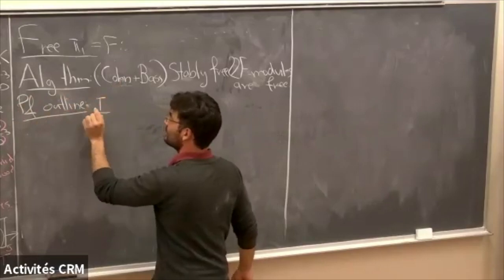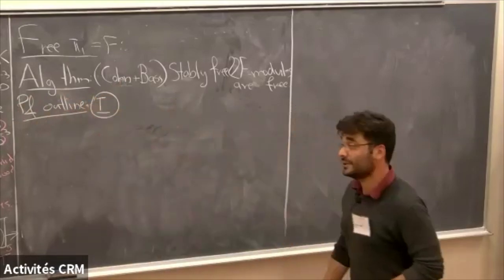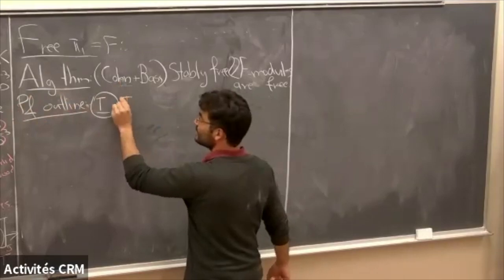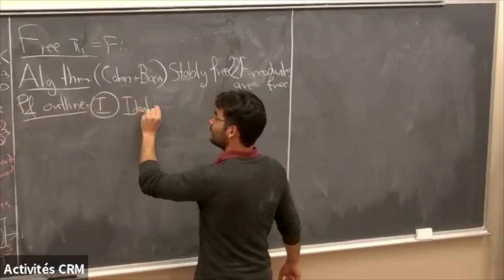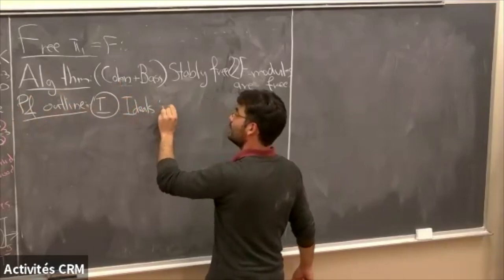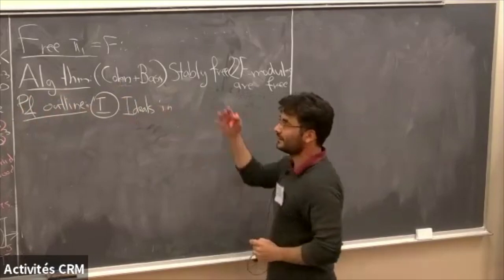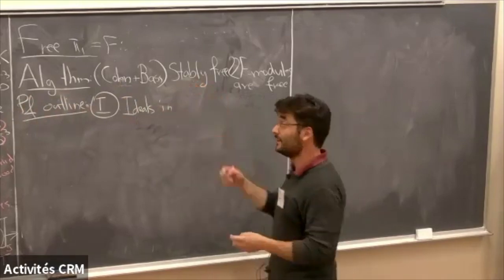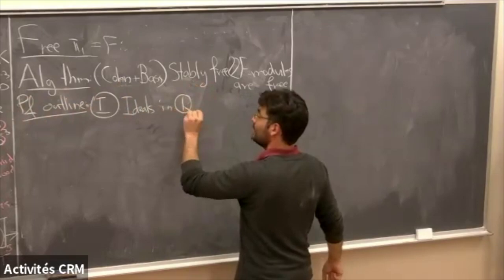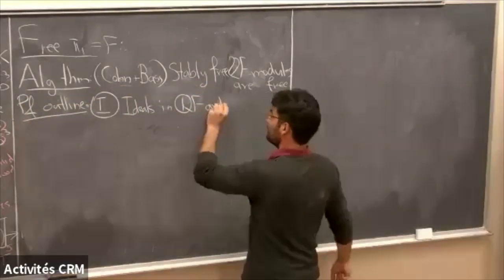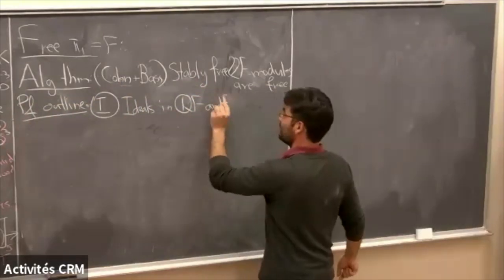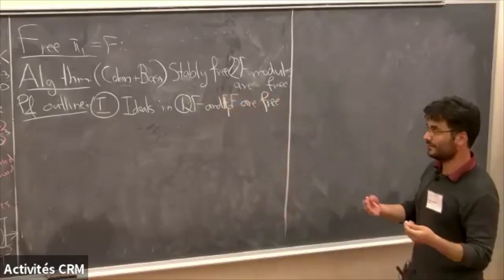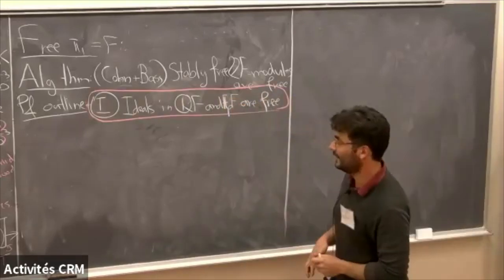The main thing Cohen proves is the following: he proves that ideals in the group ring — and algebraically it's easier to work with field coefficients — ideals in Q[F] are free. Also, the stably-free version: F[Q[F]] modules are free. That's, in some sense, the core statement.